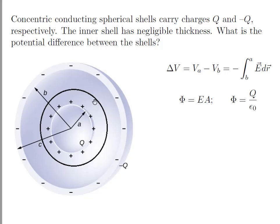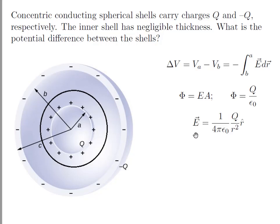Electric flux equals E times the area of the sphere, and Phi equals Q divided by epsilon 0. The electric field inside the Gaussian surface equals 1 over 4 pi epsilon 0 times Q divided by r squared.